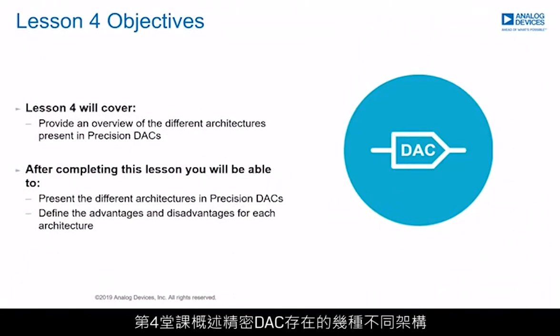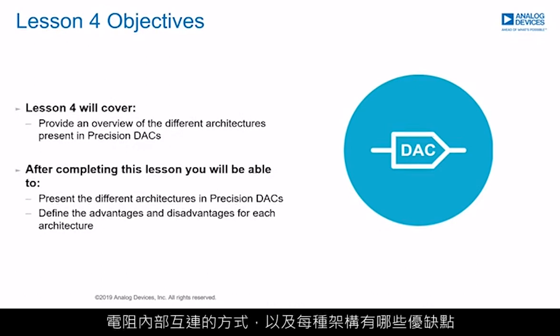Lesson 4 will provide an overview of the different architectures present in precision DACs. The main objective is to understand the different precision DAC architectures depending on how resistors are internally interconnected and what advantages and disadvantages each architecture offers.